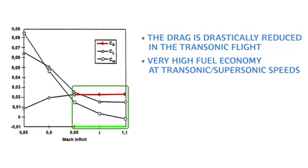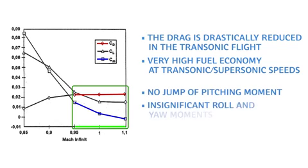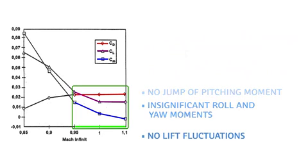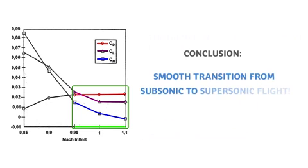Moreover, the center of pressure remains close to the center of symmetry, meaning no jump of pitching moment and insignificant roll and yaw moments. Also, there are no lift fluctuations. Conclusion: Smooth transition from subsonic to supersonic flight.